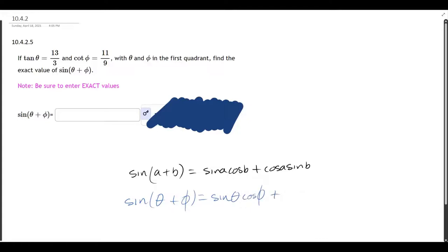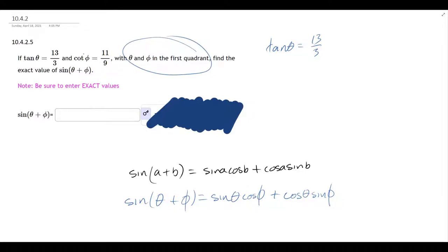So this is sin(θ)cos(φ) + cos(θ)sin(φ). Let's deal with theta first. Tangent is 13 over 3. Now they do tell us we're in the first quadrant, so everything is going to be positive. We do not need to worry about negatives here. So I have tangent.